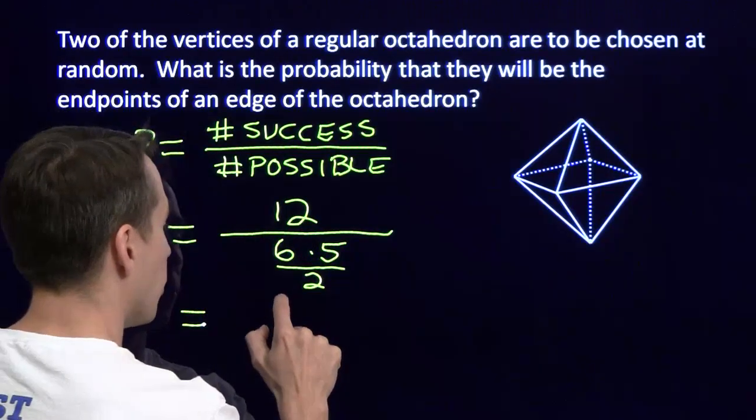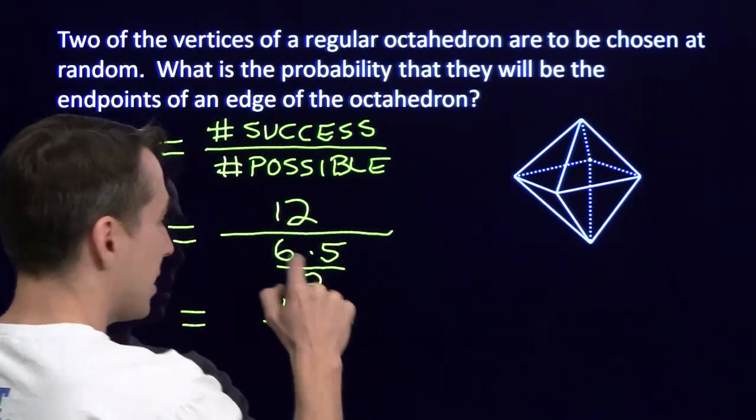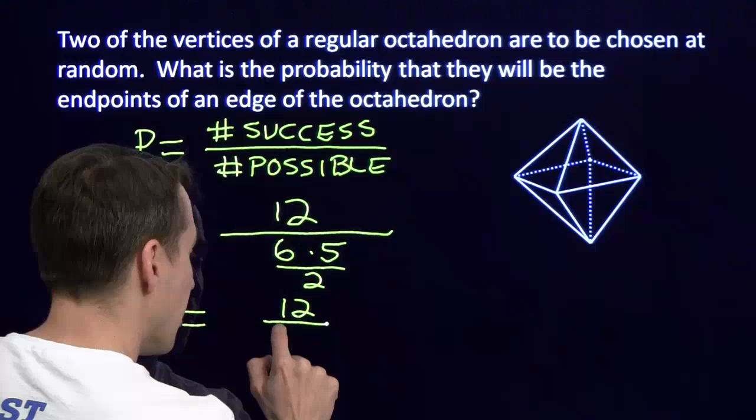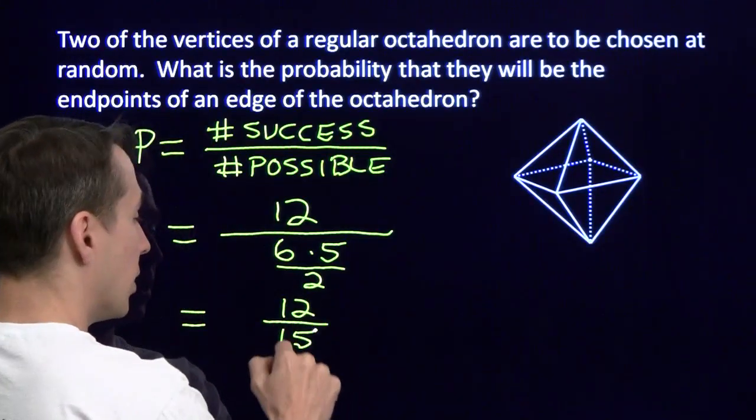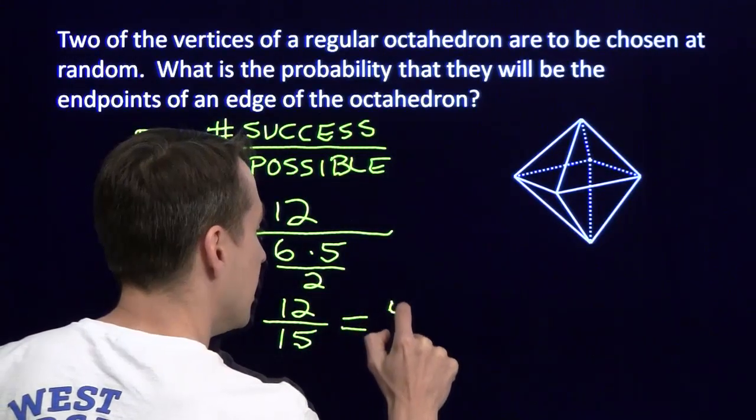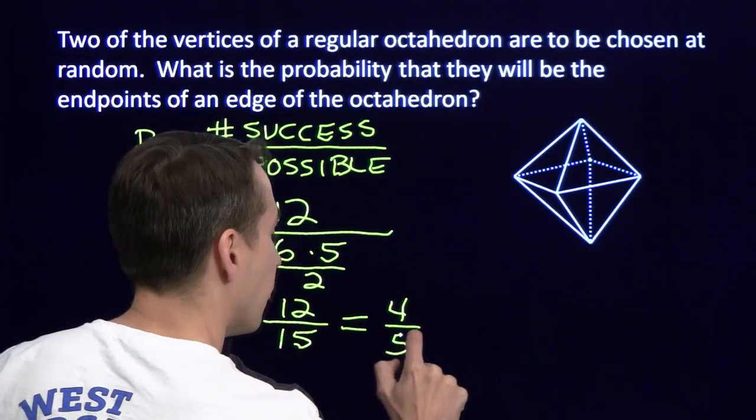Now we just compute this. We have the 12 in the numerator. Six times five is 30, divided by two is 15. We've got 12 over 15, which simplifies as 4 fifths.